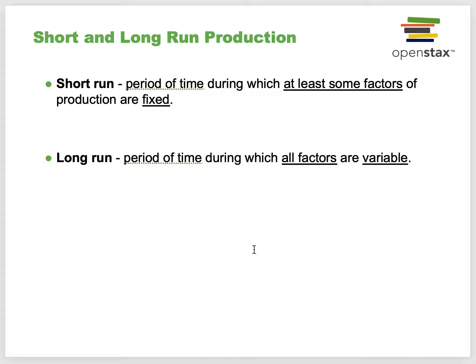Short run is the period of time during which at least some factors of production are fixed—the fixed costs don't change. Long run is the period of time in which all factors are variable. In accounting, short term is usually one year, but in economics it's slightly different: if you don't increase your fixed cost of your factory or production facility, you're operating in the short term. As soon as you add to or sell off part of your factory, you've entered the long term because you've changed the fixed cost.